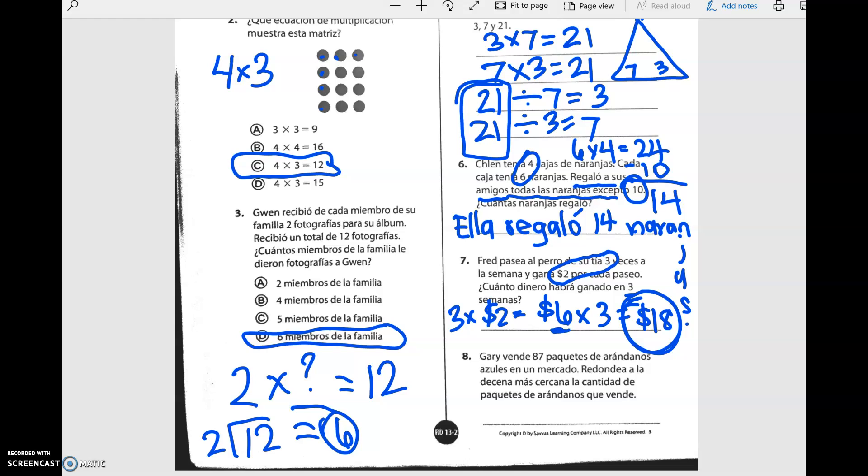Gary vende ochenta y siete paquetes de arándanos azules en un mercado. Arándanos azules, chicos, are blueberries. Redondea a la decena más cercana la cantidad de paquetes de arándanos que vende. Redondea. We're going to play Johnny Goes to the Bathroom. So here are our houses. And we've got eighty-seven. La decena menor es ochenta mayor noventa. And then we're going to draw our line. Now Johnny, we're going to look next to the decena at the seven. He's at the seven. So if Johnny has to go to the bathroom, should he go to his friend's house or stay home? You're right. He's going to his friend's house. So, redondeando, he's got más o menos noventa arándanos.